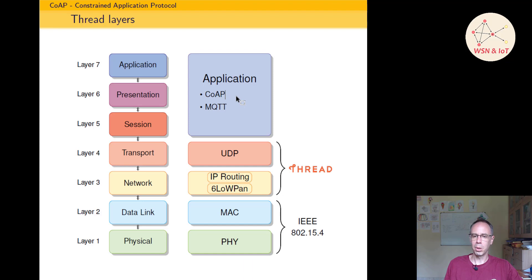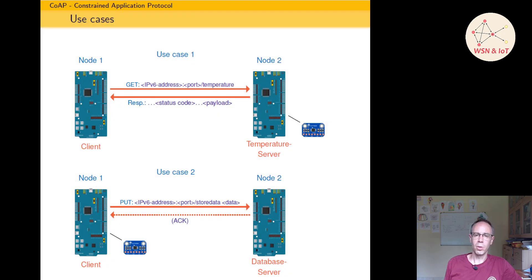CoAP is a client-server communication, so we have to think a little bit how we want to exchange the data. Let's assume node 2 has a temperature sensor and node 1 wants to get the temperature data from the sensor. Then node 1 could send a GET request with the IP address from node 2, the port number, and the temperature resource. And node 2 answers then with the status code and the temperature as payload. This is one solution, but the disadvantage here is that the temperature server has to be always on, of course, so it could not be a battery-powered node.